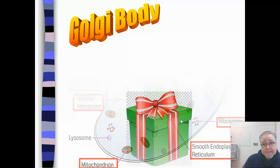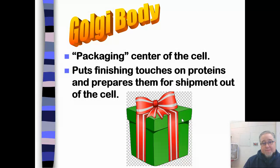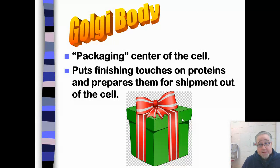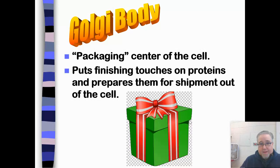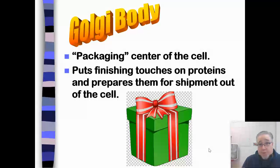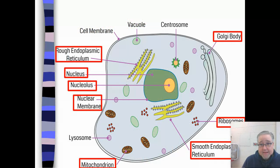The Golgi body, or Golgi apparatus, is what we call the packaging center of the cell. Remember, cells are making proteins. Once those proteins get built, they have to be packaged and inspected to make sure they're built correctly — no mistakes in production — and finishing touches are put on them before they eventually get shipped out of the cell. So the Golgi body is kind of the packaging center of the cell.